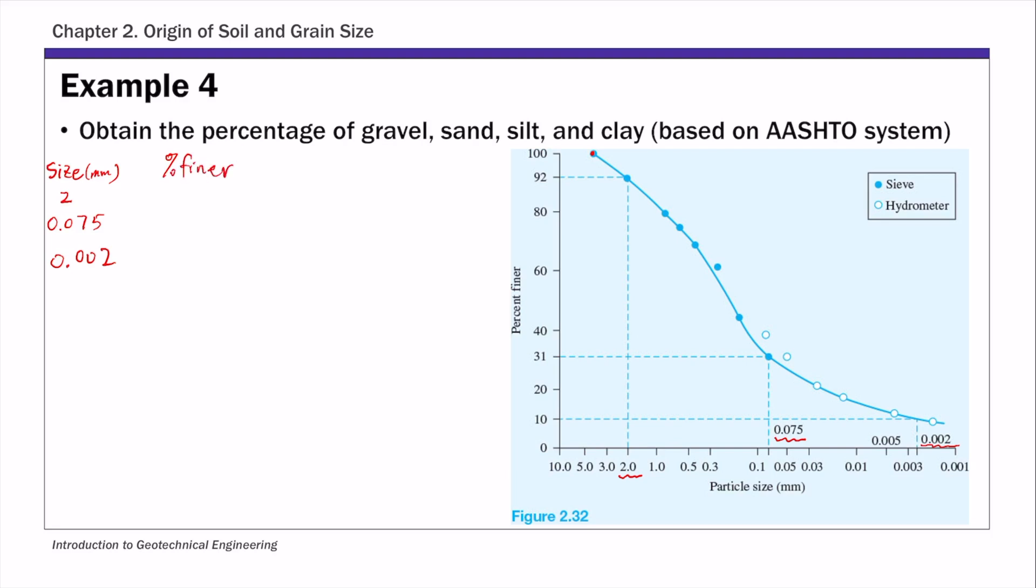So percent finer, the first one for this 2 mm. You start from this 2 mm on the horizontal axis and then find the corresponding percent finer. So that's the y-axis. For 2 mm, the corresponding percent finer is 92%. And then for 0.075, again you start from the x-axis, the particle size, and then you find the corresponding percent finer.